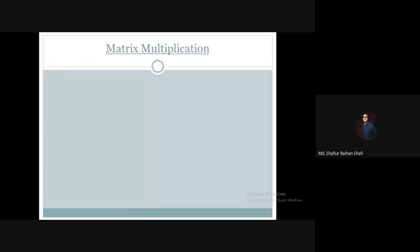Hello, welcome to the advanced algorithm course. In this tutorial we're going to discuss matrix multiplication. A matrix is a tabular format which has r number of rows and c number of columns, and in this tabular format there are a total of r multiplied by c number of elements.